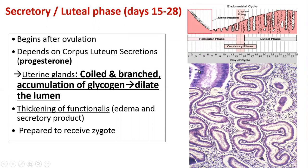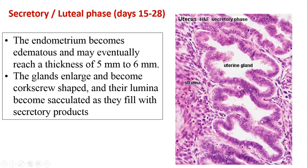The secretory phase corresponds with the luteal phase of the ovarian cycle, beginning just after ovulation. The corpus luteum secretes progesterone, which acts upon the glands and vessels — the arteries become very coiled and branched, there is accumulation of glycogen, and the glands become more coiled. Thickening of the functional layer, edema, and secretory products will be present; lumen will have secretions. The endometrium reaches approximately five to six millimeters in thickness, and glands enlarge into corkscrew-shaped glands with sacculated lumen filled with secretory products surrounded by stromal tissue.